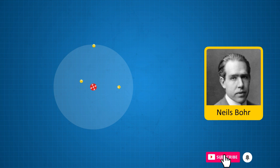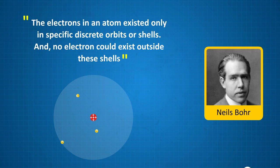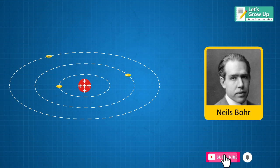This was the greatest achievement in the journey of understanding atoms. He proposed that the electrons in an atom existed only in specific discrete orbits or shells, and no electron could exist outside these shells. This model was also compared to the solar system.